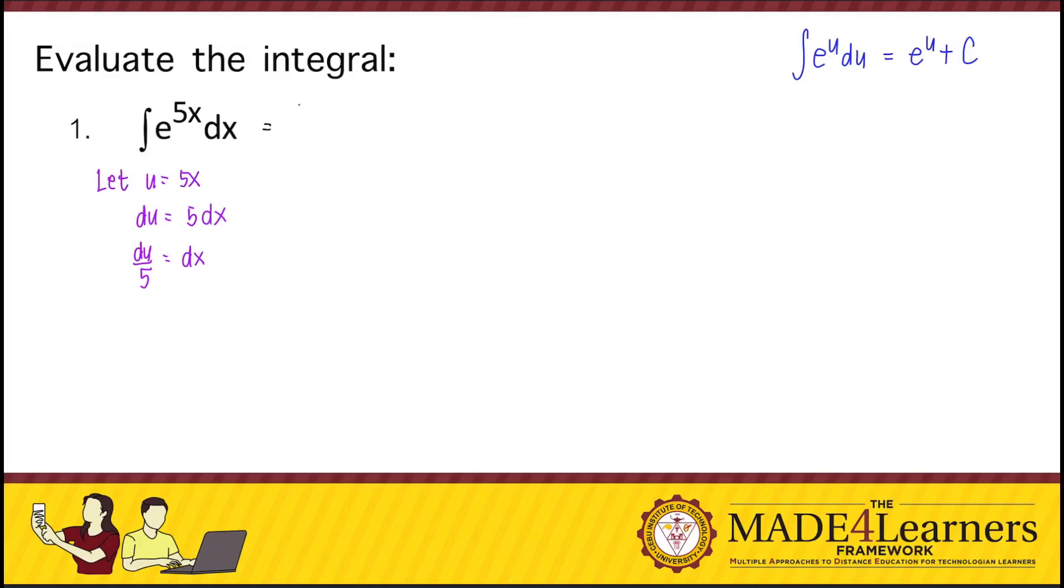We now change our given using the new variable: e to the power u, du over 5. We put the constant outside, so that's one-fifth e to the power u du.